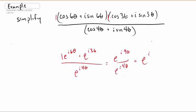And in its polar form, this is just cosine 5 theta plus i sine 5 theta.